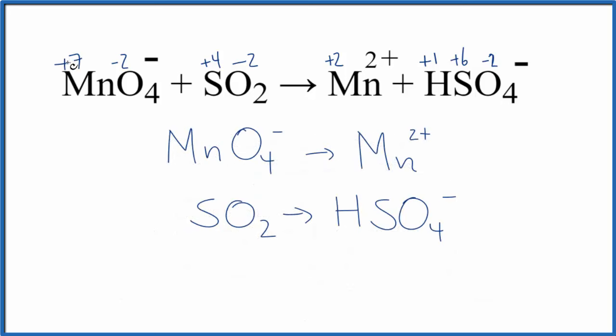So here the manganese went from plus 7 to plus 2. This becomes a smaller number. This has been reduced.